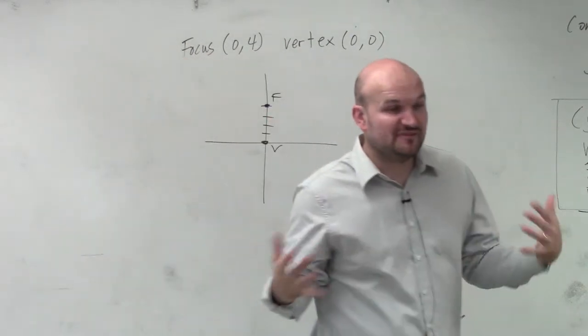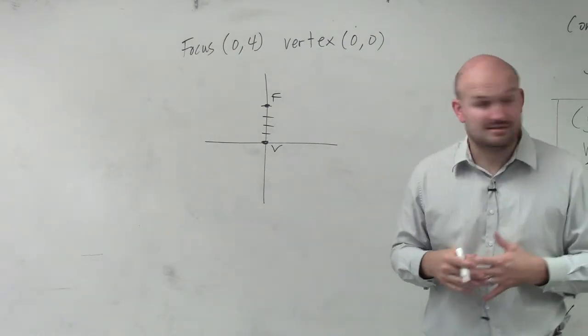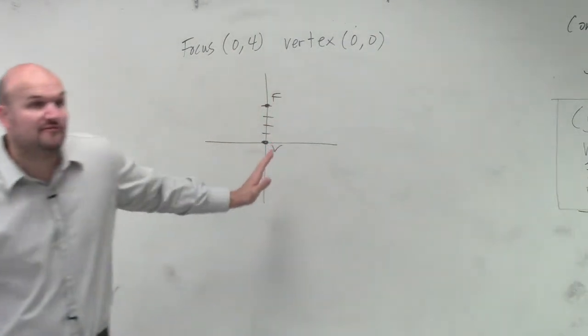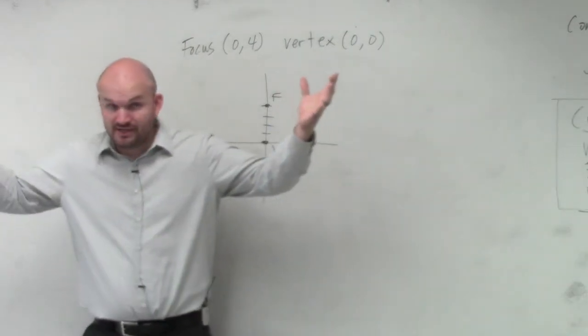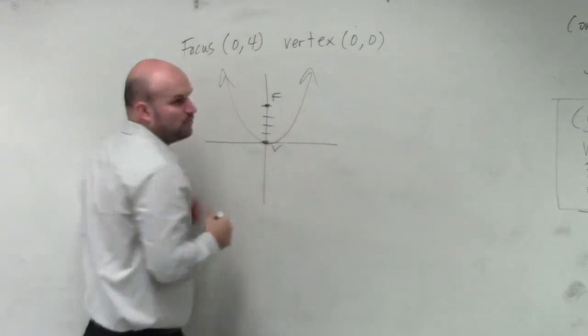Now, just based off of this information, I know a lot about my equation. One thing is I know that my vertex always opens up to its focus. Always. So that means what should be squared now?